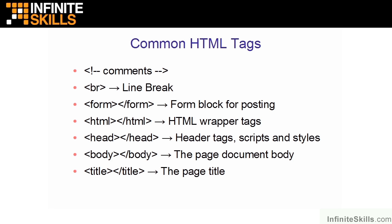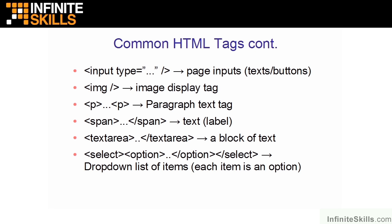The body tags are where the main document code takes place. The title tag is the name of the page that displays when you browse to it. Input is a self-closing tag used to gather information via text or button. The image tag is also self-closing and allows us to display images. P tags are paragraph text tags, and span tags are for single lines of text — essentially a label. The textarea tag is for a block of text, and the select tag is our drop-down list of items, where each item has its own option tag.